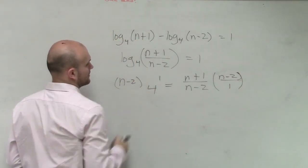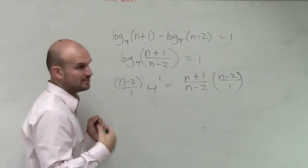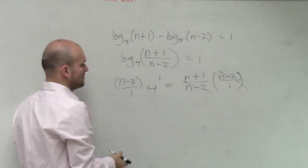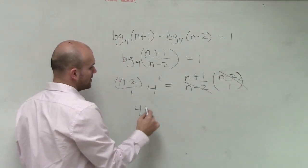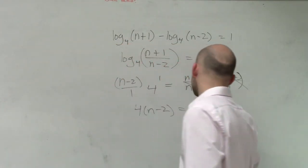So I want to multiply by n minus 2 on both sides, right? You can write over 1 if you want to. I'm going to multiply on both sides. So therefore, this will now eliminate itself and I'll have 4 times n minus 2 equals n plus 1.